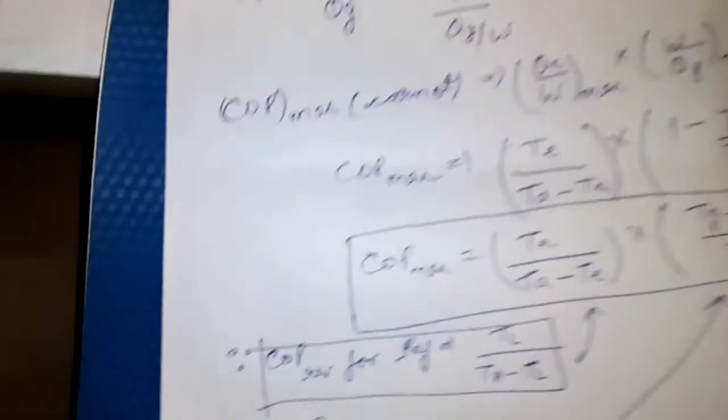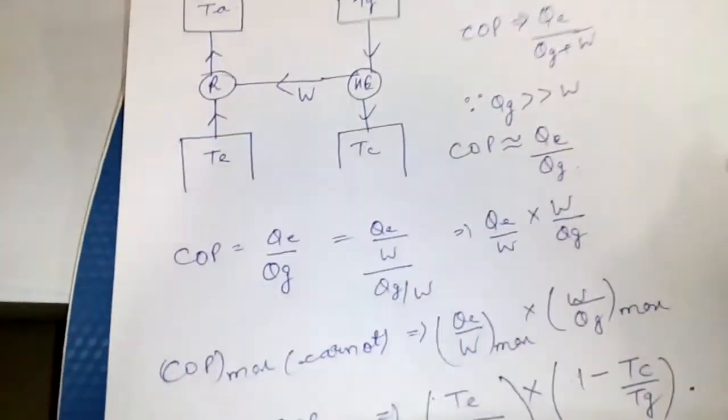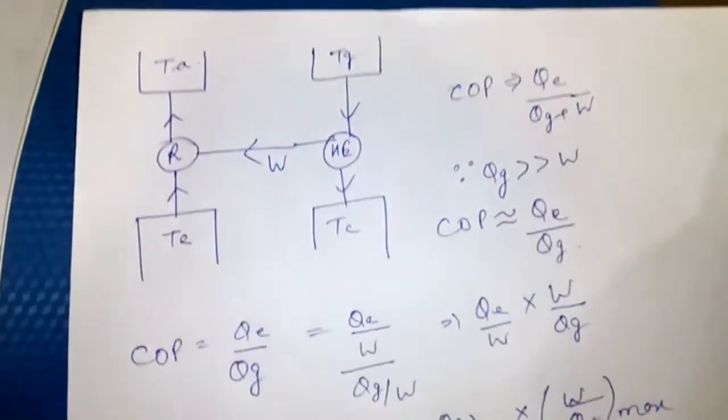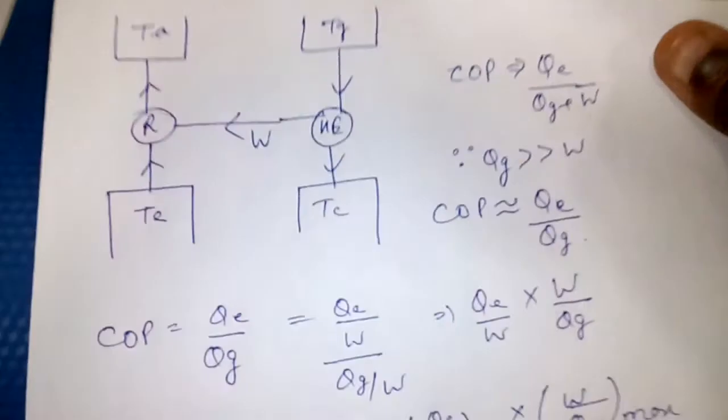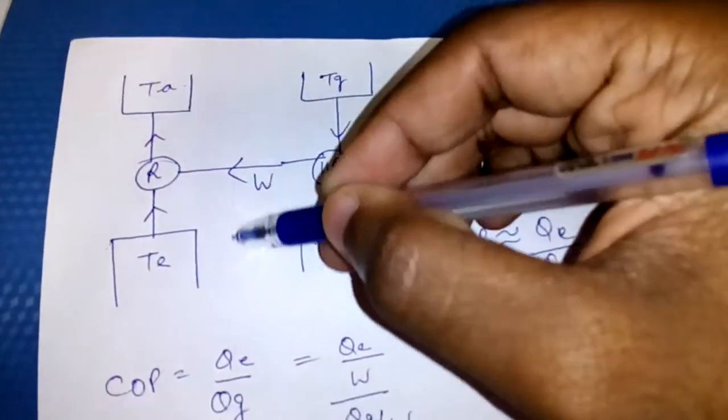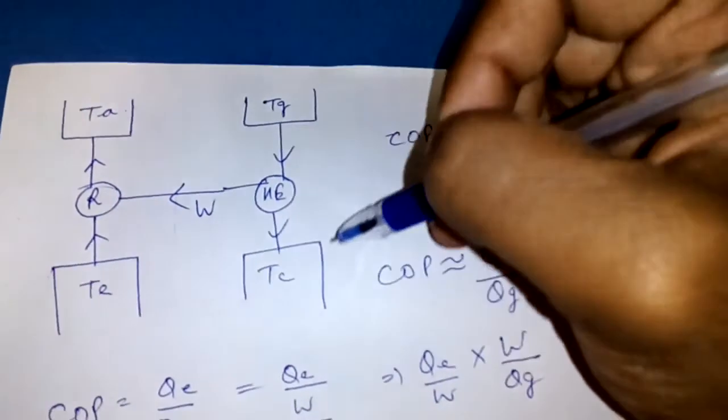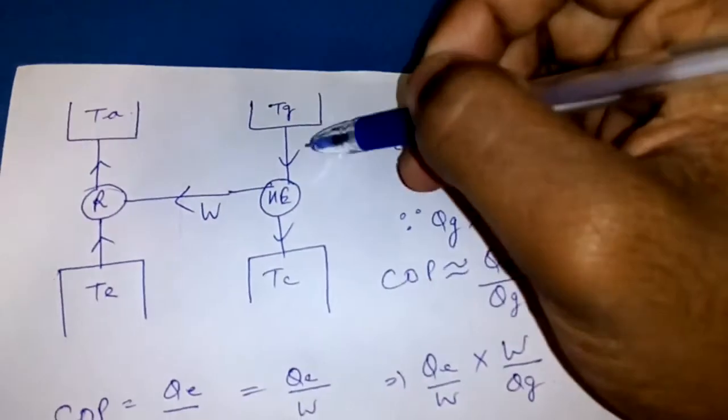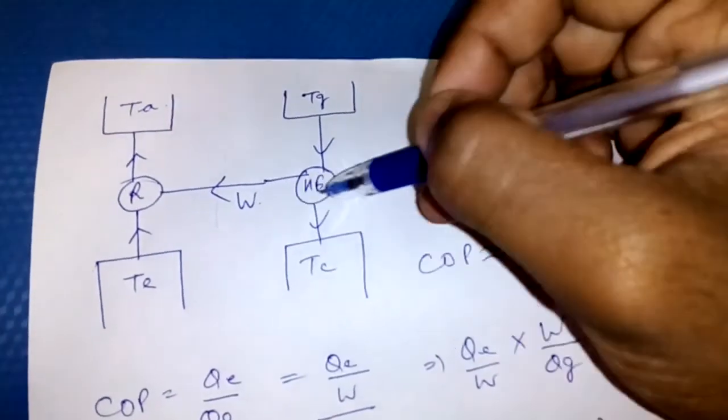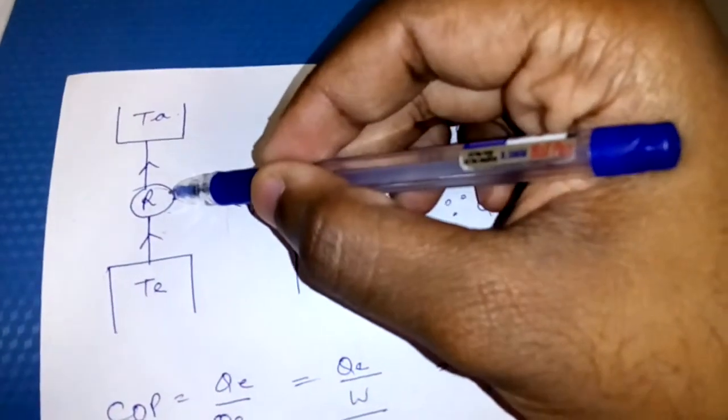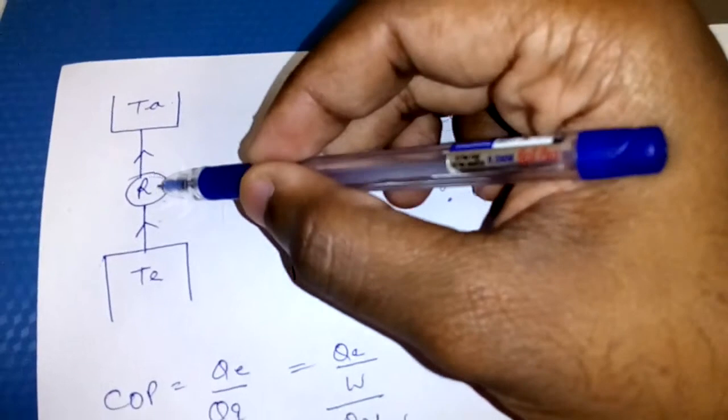Now for analysis, here you can see I have taken two systems: one is the refrigeration system, this one, and here is the heat engine system. The work output from the heat engine is the work input for the refrigeration system, for the refrigerator.